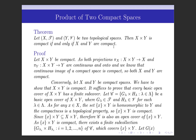Let us prove this theorem. Let X cross Y be compact; then we have to prove that X and Y are compact. As we know, projections π_X and π_Y are continuous and onto. These are continuous and onto mappings, and we also know that the continuous image of a compact space is compact. So both X and Y are continuous images of compact space X cross Y, and so both X and Y are compact.